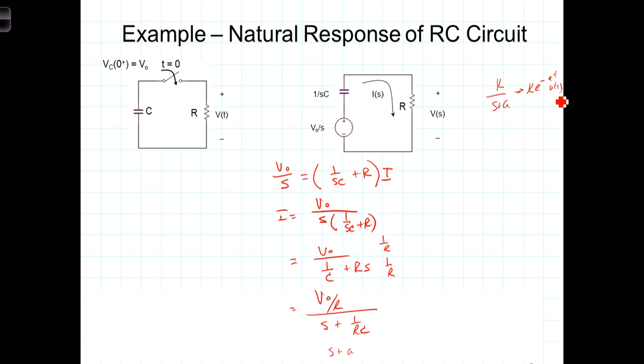So we see that A equals 1 over RC. The constant is V0 over R, and going back into the time domain, since this is I of S, coming back into the time domain, we'll have I of T equals the constant V0 over R times e to the minus A, but A is 1 over RC times T times U of T.